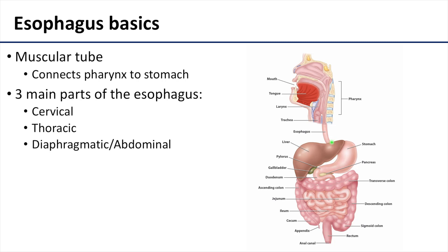Sometimes those are considered separately, sometimes they're considered together. The abdominal portion is really what's distal to that esophageal hiatus of the diaphragm. Remember the diaphragm would be located right about here. So you'd have your esophageal hiatus to allow the esophagus to enter into the abdomen, and then you'd have a very short abdominal portion that will connect to the stomach.